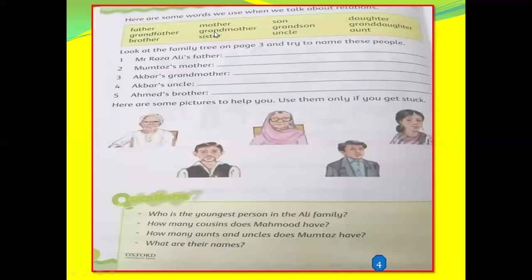Now: father and mother. All of you have a father and mother — like mama and baba. Your mama is your mother and your baba is your father. Now son: if you are a boy, then you are the son of your parents. Your mother and father can say, 'I have one son,' 'I have two sons.' Now daughter: if you are a girl, she is the daughter of her mother and father. Your parents can say, 'I have one daughter.'